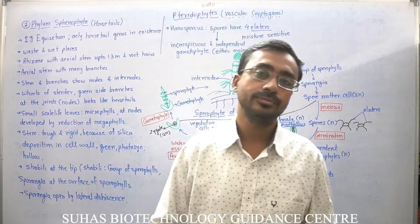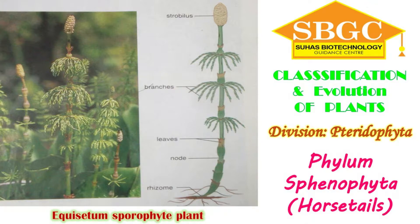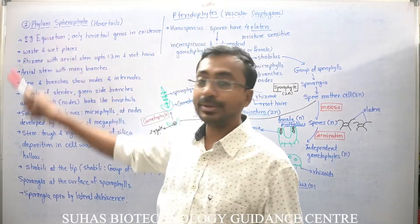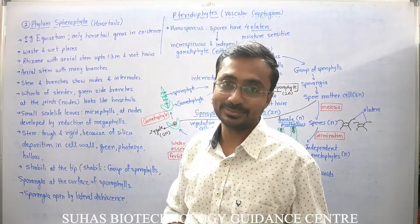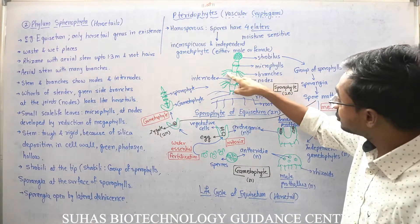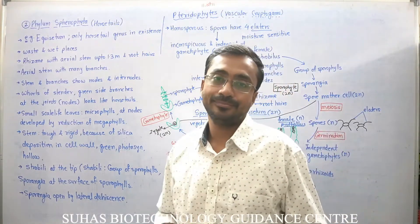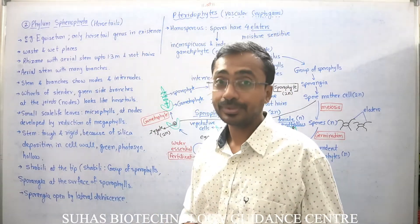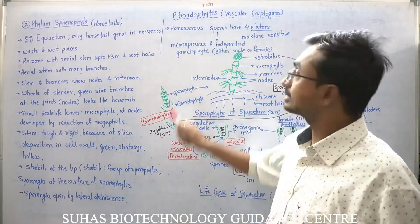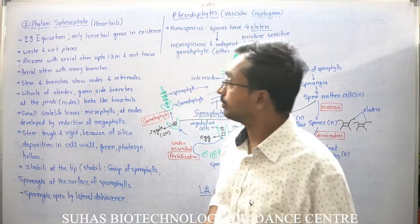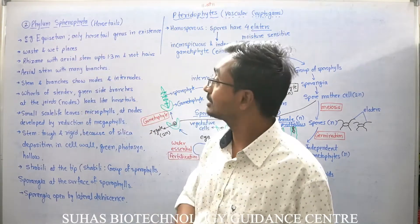Hello students, let's move forward towards another tracheophyte. Today we are going to learn about the phylum Sphenophyta, in which the best known example is Equisetum, also referred to as horsetail because of its branch-like nodes. This branching gives the appearance of a horsetail. It is the second evolved phylum amongst tracheophytes, which are the vascular cryptogams. The best known and only genus amongst Sphenophyta is Equisetum.